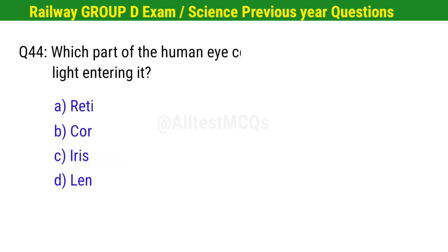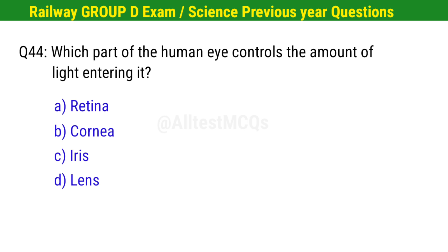Question No. 44. Which part of the human eye controls the amount of light entering it? Correct option is C. Iris.